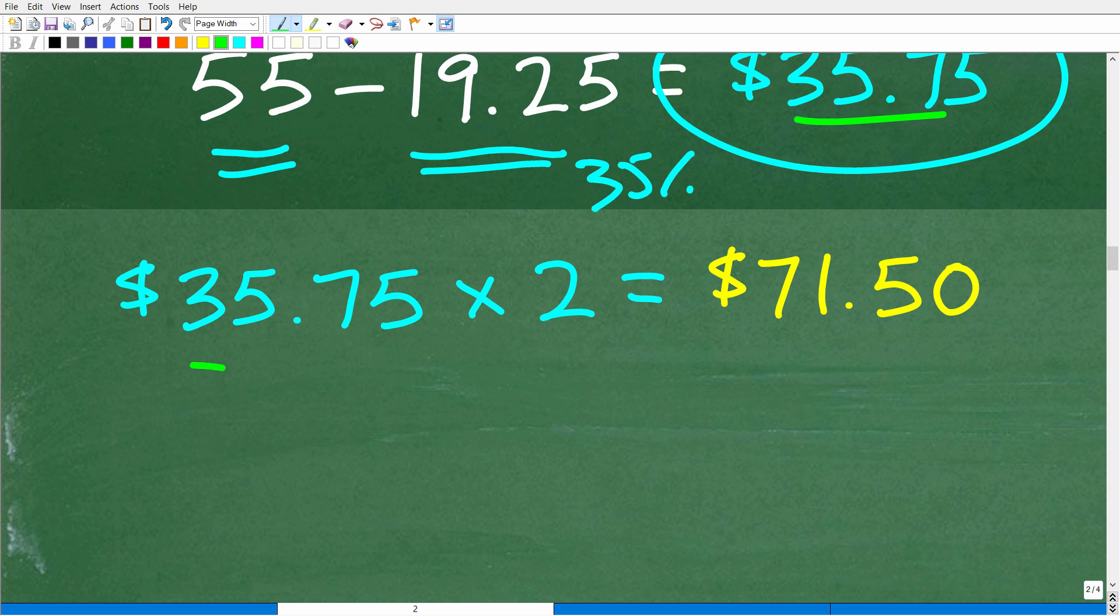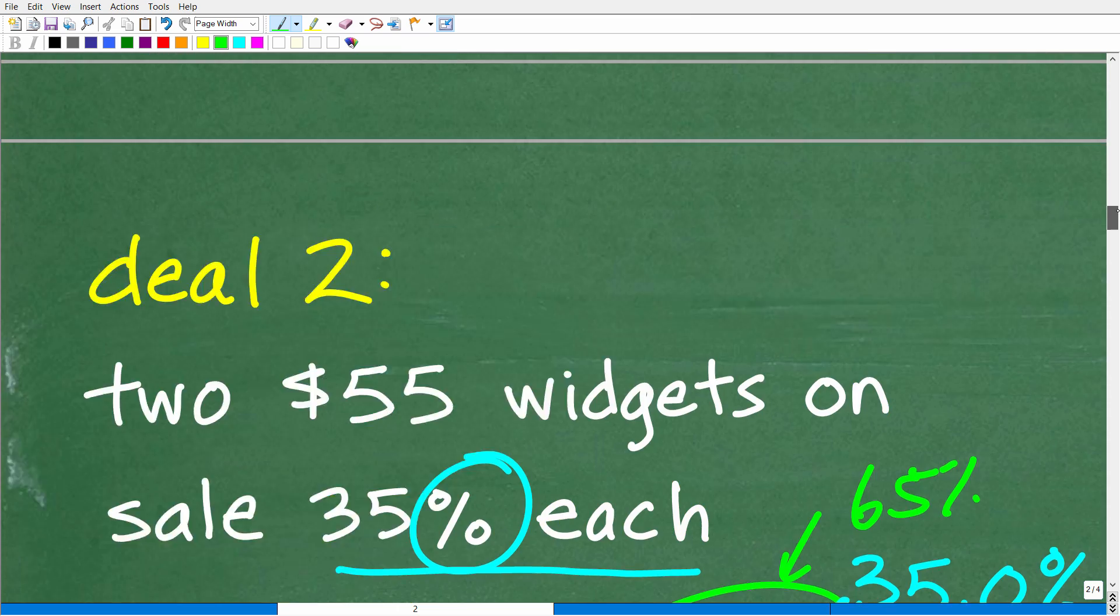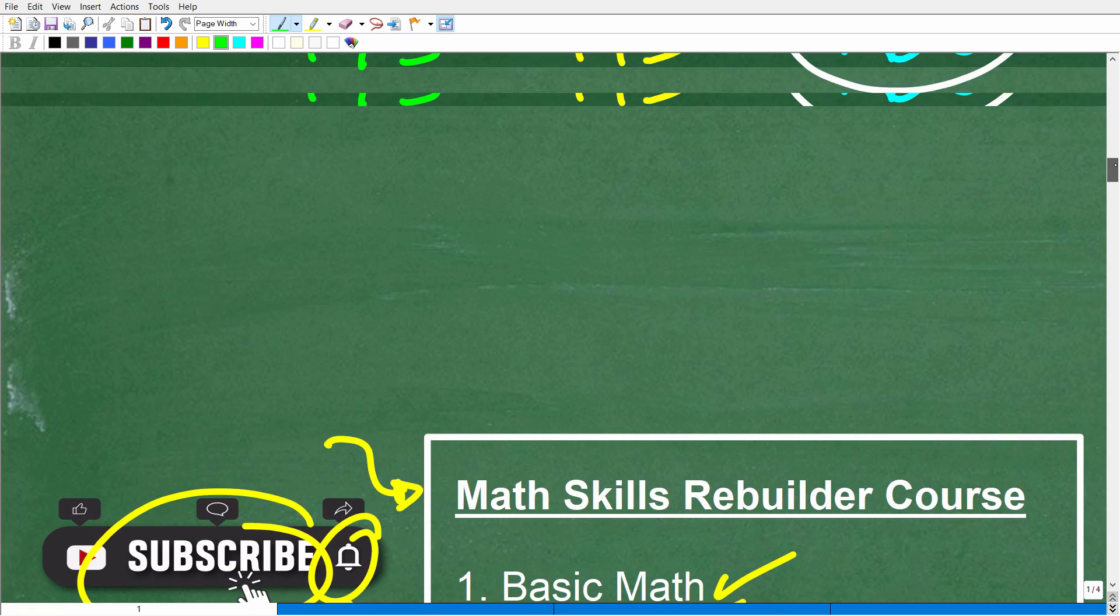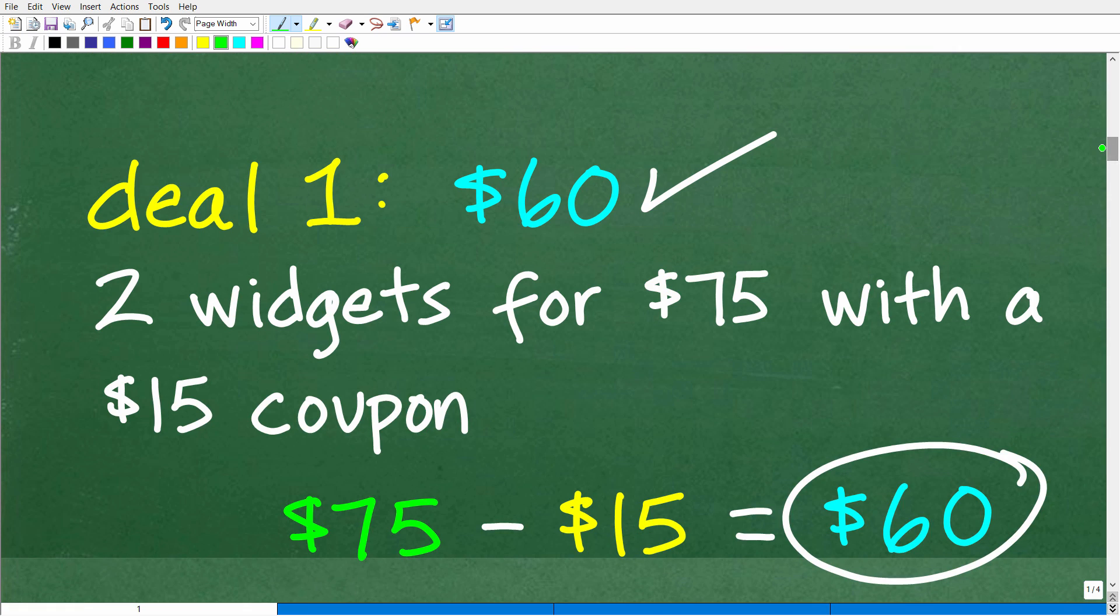Okay, so this is how much one of these widgets costs on sale. Well, of course we want two of these. So $35.75, that's our 35% discount on one widget, we're going to multiply that by two because we want two widgets and we end up here paying $71.50, which of course is more expensive than this first deal right here for $60.